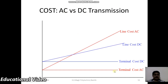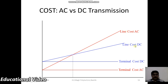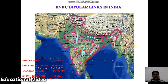This is a cost-wise analysis of HVDC DC and AC. The terminal cost of AC is less compared to DC, while the line cost of AC is more compared to the line cost of DC.